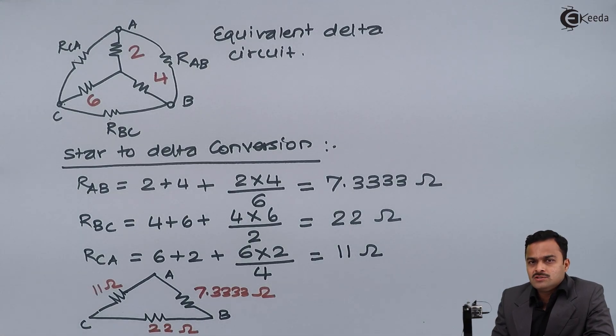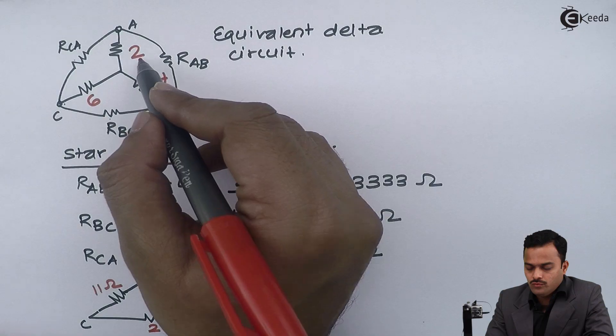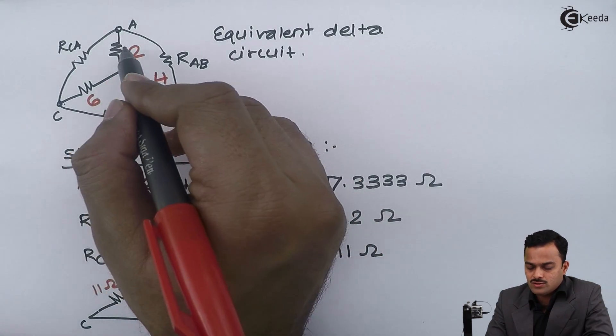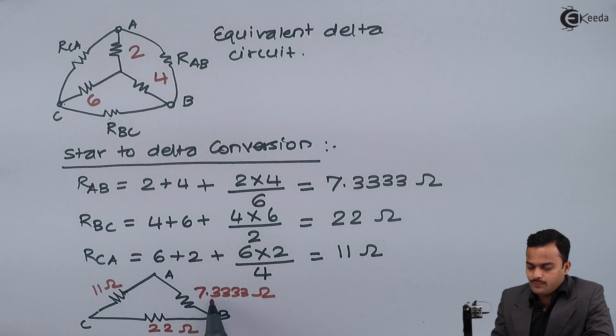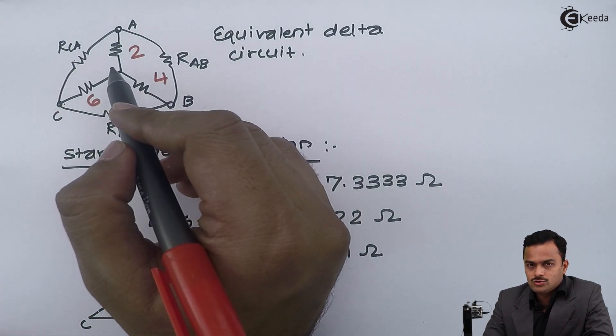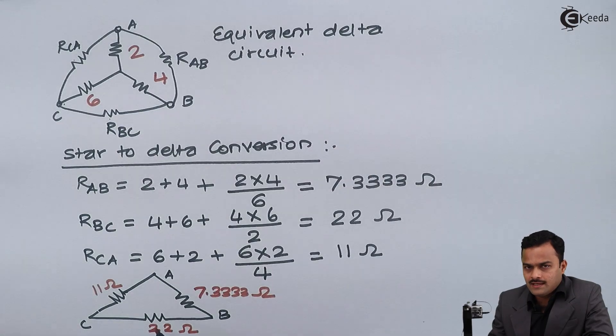One thing you have to keep in mind. Generally, whenever you are converting star to delta the values of resistor in delta that you are getting normally at the higher side. For example, in star I am having 2, 4, 6. The lowest value of resistor in star is 2 ohm. And whenever I convert that into a delta I will get 7.3333, 22, 11. The lowest value of delta is 7.3333 ohm which is greater than greatest value in case of a star. So, whenever you are applying a formula you have to remember that whenever I am converting star to delta I am tending to increase resistance values.